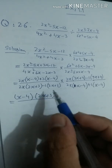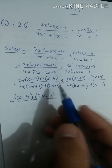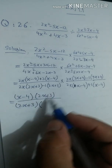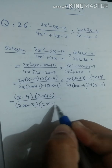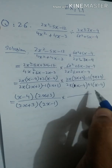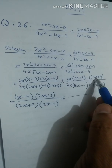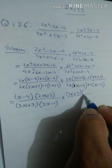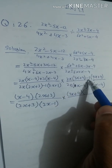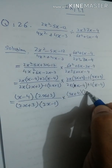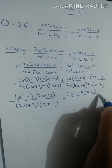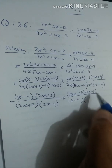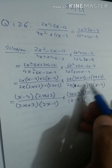Similarly, below we have (2x + 3) as common, and after taking it out, (2x − 1) remains. Above we have (3x + 4) common, leaving (2x − 1). And below we have (x − 4) common, leaving (2x + 1).